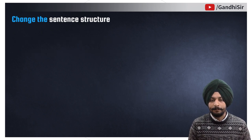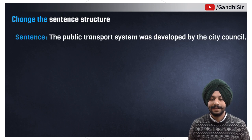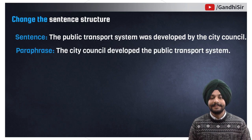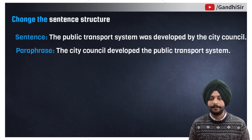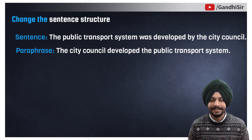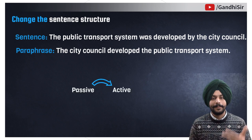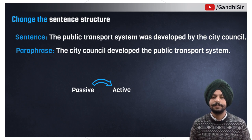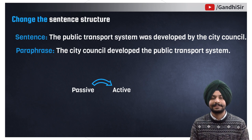Now passive to active. The sentence: 'The public transport system was developed by the city council.' The paraphrase is: 'The city council developed the public transport system.' As you can see, we have changed the passive voice to the active voice. This is also a method of paraphrasing by changing sentence structure.